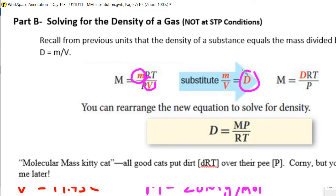times R times temperature divided by pressure. And then we can rearrange this algebraically to get density by itself. And so if we want to solve for density, we get a new equation. So we have density of a gas is equal to the molar mass times the pressure divided by the gas constant times Kelvin temperature.